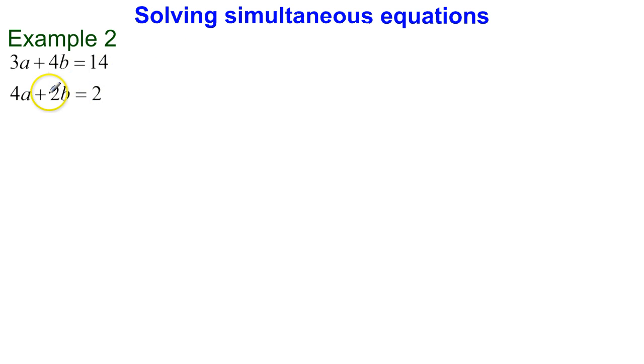In this example it's slightly different because our coefficients of variables a and b aren't the same as each other. That means if I take one equation away from the other, or if I add these equations together, nothing's going to eliminate at the moment.